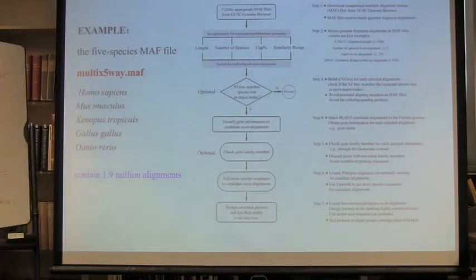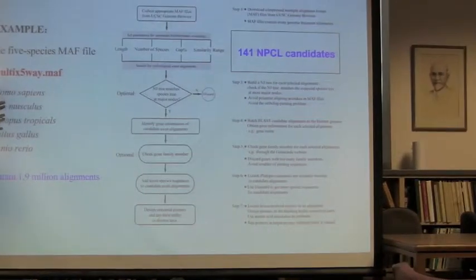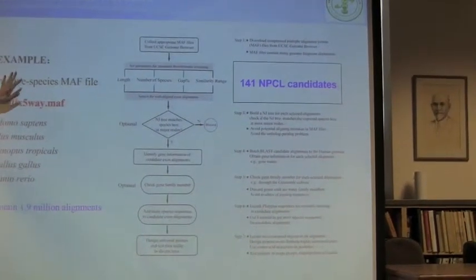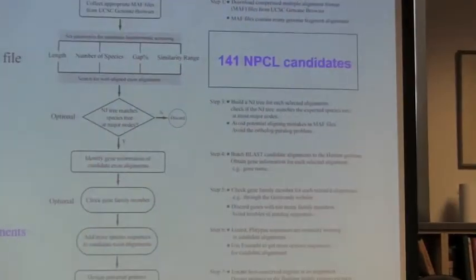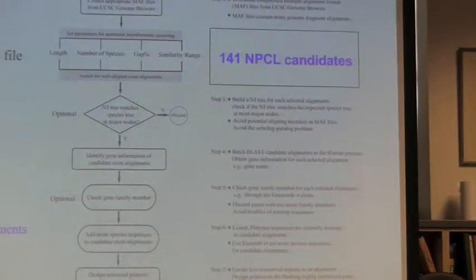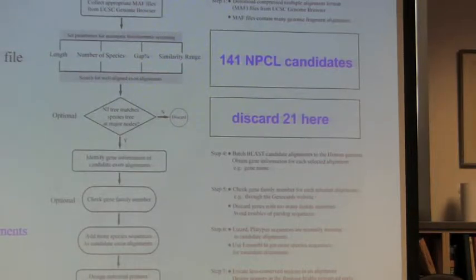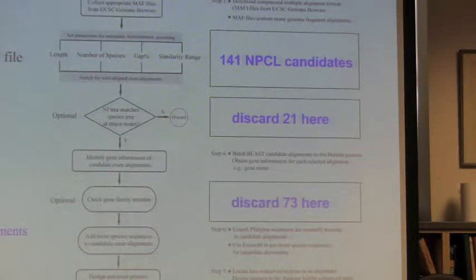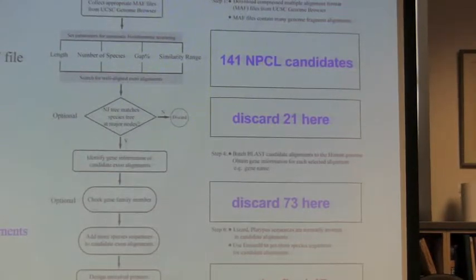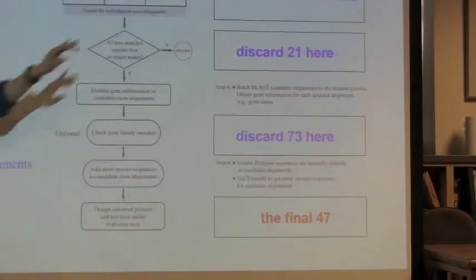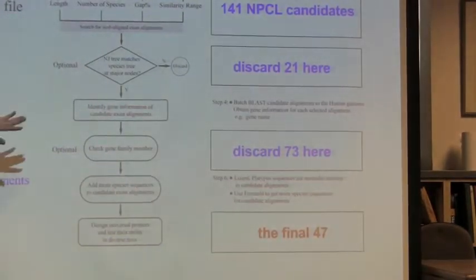That's why I added another step: I blast the sub-alignments against the human genome to find what gene it is, then judge them according to gene family member count. If their family members exceed five, I discard them — I want to keep single-copy genes only. For this dataset, the first step gave 145 candidates. After building NJ trees, I discarded 21. After checking gene family members, I discarded more. The final count is 47 — not many, but I made sure these are very useful ones. And I'm sure you can get hundreds if you modify the parameters or choose a different MAF file.